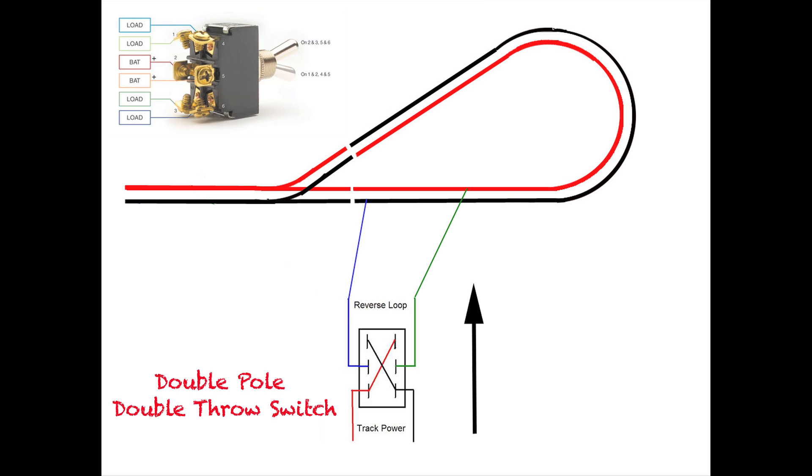So we isolated that whole loop and put it on its own reversing switch so that we can control the polarity of that loop and then align that loop to either the bottom part of the loop, the incoming part at the bottom, or the outgoing part at the top by throwing that switch.